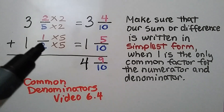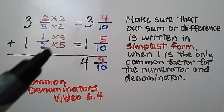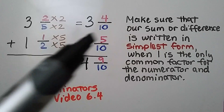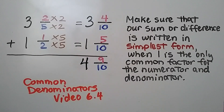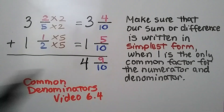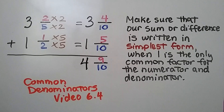For 1 and 1 half, we need to turn the denominator into a 10. 2 times 5 is 10, so we multiply the numerator by 5 and get 5 tenths. Now we can add 3 and 4 tenths plus 1 and 5 tenths. We add the numerators: 4 plus 5 is 9. We use the common denominator, then add the whole numbers. We get 4 and 9 tenths.